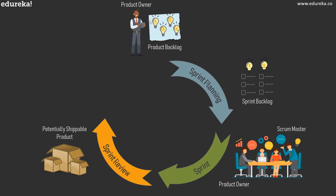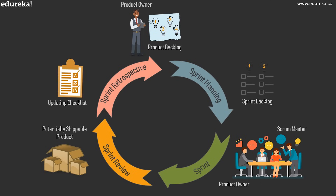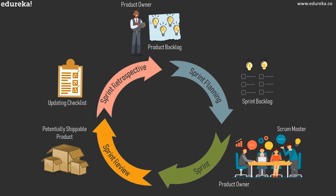Unlike the waterfall approach where you have a final product only at the end, in Scrum you have a properly functioning product at the end of every sprint. After the sprint review, the development team gathers in a sprint retrospective meeting, where they discuss what they did well and what they could have done better — such as tech limitations or overloaded team members — and decide how to improve efficiency. The entire cycle starts with sprint planning and ends with the sprint retrospective, repeating until the deadline is reached, the budget is exhausted, or the Product Owner is satisfied.